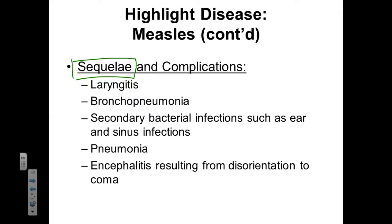A very common sequelae of a joint replacement — let's say a patient is getting a knee replaced — a common sequelae they need to worry about is a blood clot forming in the lower leg. Getting the knee replaced doesn't directly cause the blood clot, but it's a common complication associated with getting a knee replaced.